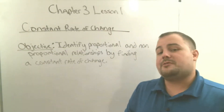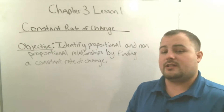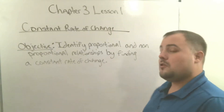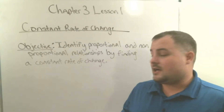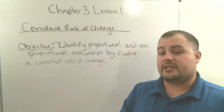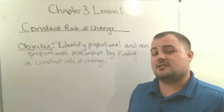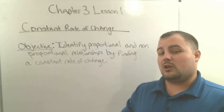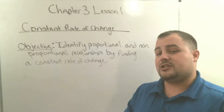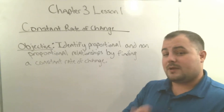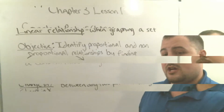8th graders, welcome to chapter 3 lesson 1. We're going to be talking about constant rate of change. Our objective is to identify proportional and non-proportional relationships by finding a constant rate of change. We need to understand what a constant rate of change is, so we have two vocab words to look at. Make sure you copy those down. This is going to help us when it comes to graphing linear expressions in this chapter.